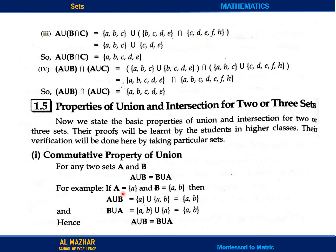For example, if A is equal to {a} and B is equal to {a, b}, then A union B will be {a, b} — because the common element 'a' is taken only once. This is A union B. Now when B union A is taken, similarly it will be {a, b}. The common element 'a' is taken once and B gives us {a, b} — so both are equal, meaning A union B is equal to B union A.